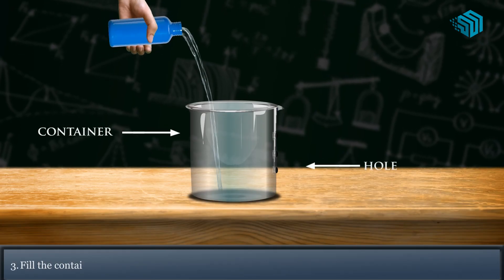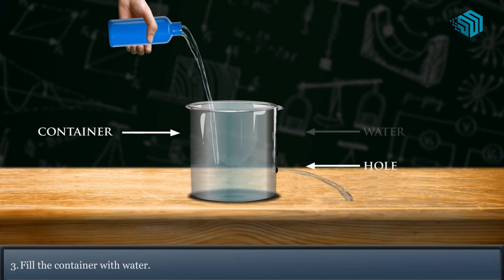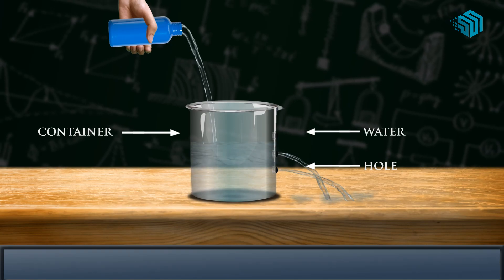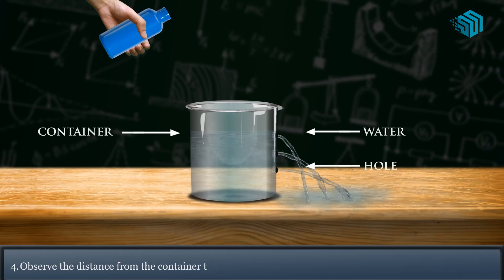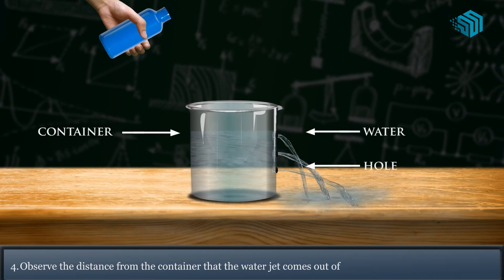Number 3. Fill the container with water. Observe the distance from the container that the water jet comes out of each hole.